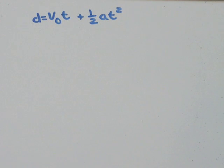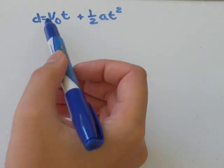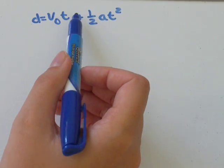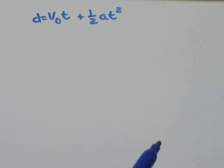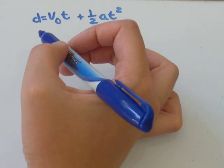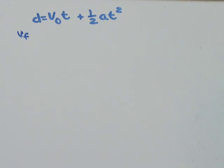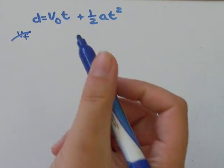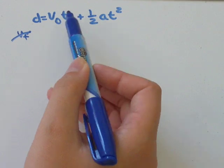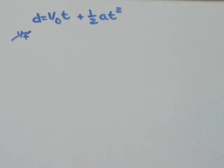Hey guys, in this video we're talking about an example where you might want to use the formula d equals v0 times t plus 1 half a times t squared. This formula doesn't use vf in it anywhere, so if you have a question you're not given final velocity and you're asked to solve for displacement, initial velocity, time, or acceleration, this is probably the formula you're going to want to choose.